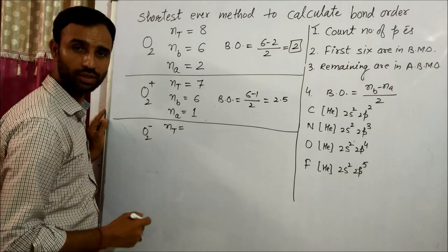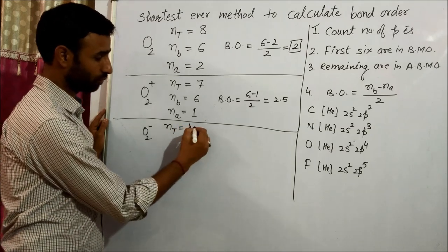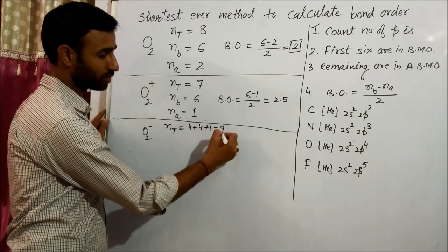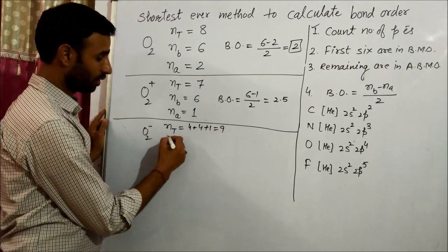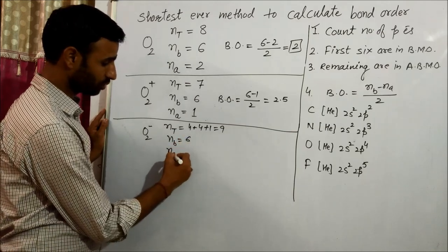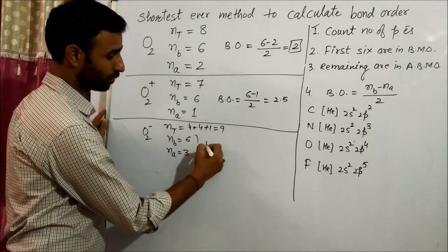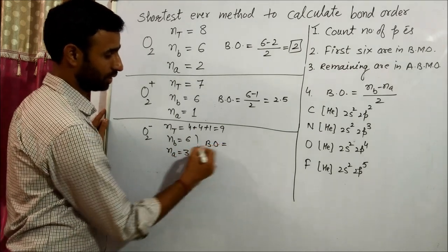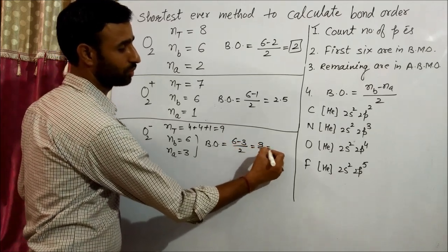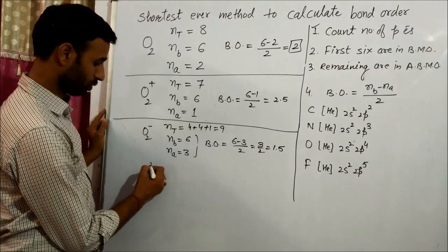O2 negative: total electrons — four from one oxygen, four from the other, and minus means one electron is added, so total is nine. Out of nine, six are in bonding and three are in anti-bonding. Bond order equals (6 - 3) / 2 = 1.5.